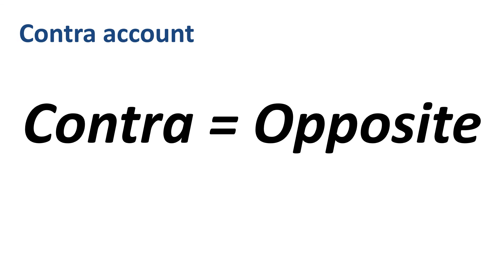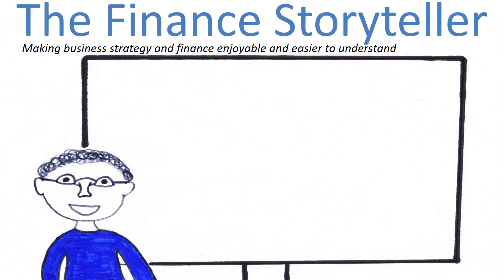The main thing to understand about CONTRA accounts is that CONTRA means opposite. CONTRA accounts are linked with another account and have an opposite balance. The usual pattern is gross amount minus the amount in the CONTRA account equals net amount. I hope you enjoyed this short explanation of CONTRA accounts in accounting.